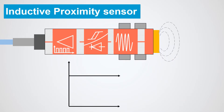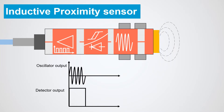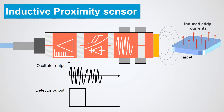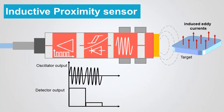The oscillator creates a symmetrical oscillating magnetic field that radiates from the ferrite core and coil array at the sensing face. When a ferrous target enters this magnetic field, small independent electrical currents called eddy currents are induced on the metal's surface. This changes the reluctance and natural frequency of the magnetic circuit, which in turn reduces the oscillation amplitude. As more metal enters the sensing field, the oscillation amplitude shrinks and eventually collapses.